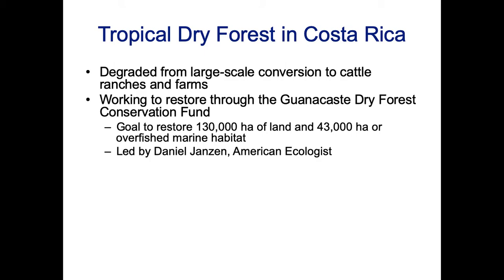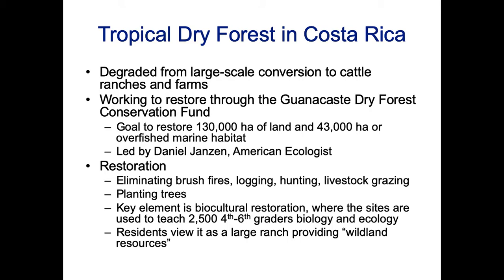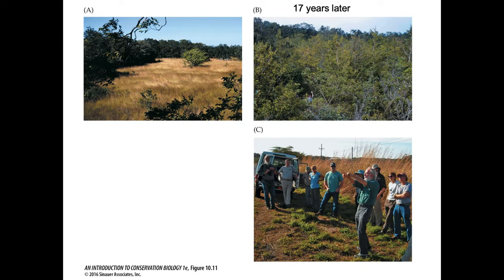This is led by Daniel Janzen, who is an American ecologist. To do the restoration, they've been eliminating brush fires, logging, hunting, and livestock grazing, and planting trees. They've done a lot of what they call biocultural restoration, where they use the restoration process to teach students about biology and ecology — they've taught about 2,500 4th through 6th graders. The residents are starting to view it as a large ranch providing wildland resources, and this connection with the community is really important for success.